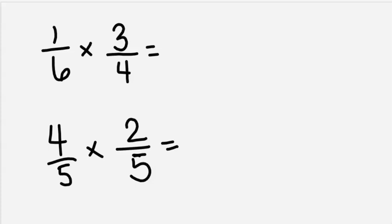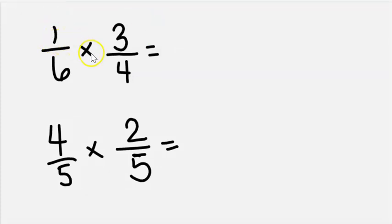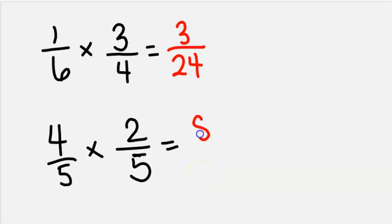Pause the video and practice these problems, then come back and we'll solve them together. Here I'm multiplying one times three equals three, and six times four equals twenty-four. So one-sixth times three-fourths equals three twenty-fourths. For the next one, the numerators: four times two equals eight, and the denominators: five times five equals twenty-five. So four-fifths times two-fifths equals eight twenty-fifths. Great job today, boys and girls, determining the rule for multiplying fractions by fractions!